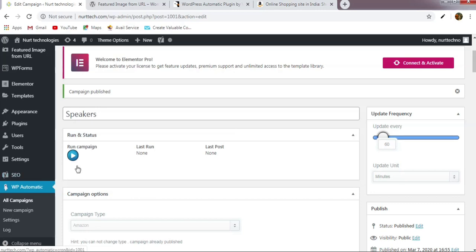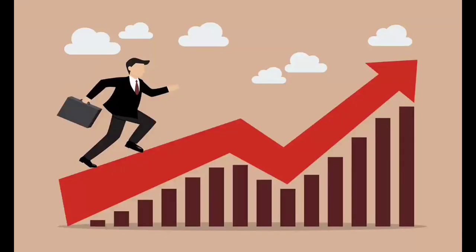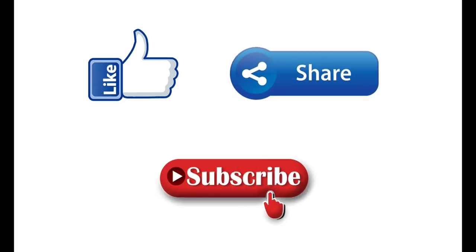So this is how you can create an Amazon affiliate website where products are uploaded automatically. This type of website will give you great earnings and save your time, because you don't have to post anything or write any content. If you liked this video, please hit the Like button, share this video, click the Subscribe button, and press the bell icon to get notifications whenever we upload our next video. Thanks for watching!